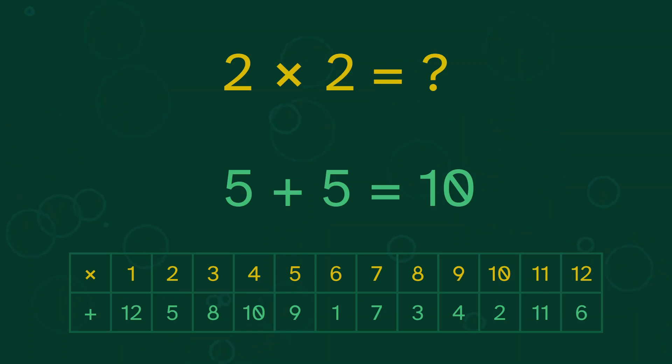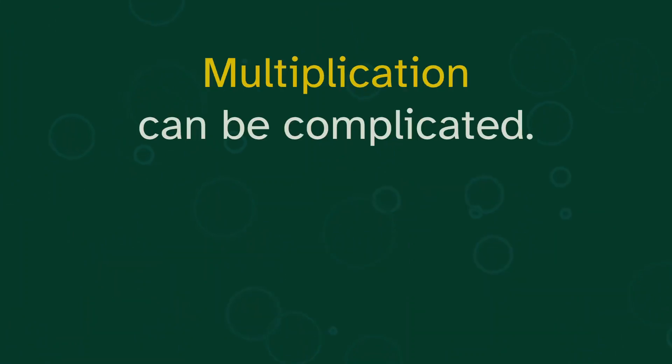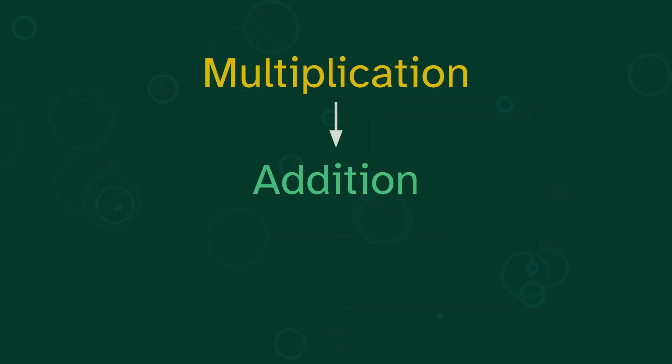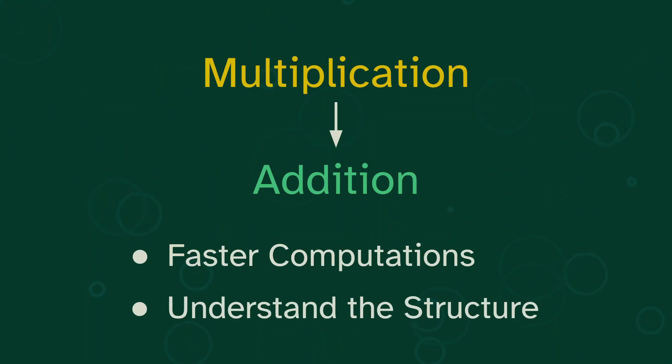Then we just reverse the map from 10 back into 4. Or yeah, 2 times 2 is 4. This simple example is a little silly, but more generally, multiplication can be complicated. In this video, we'll see how mapping it into addition can help us do faster computations and to better understand the overall structure of multiplication.